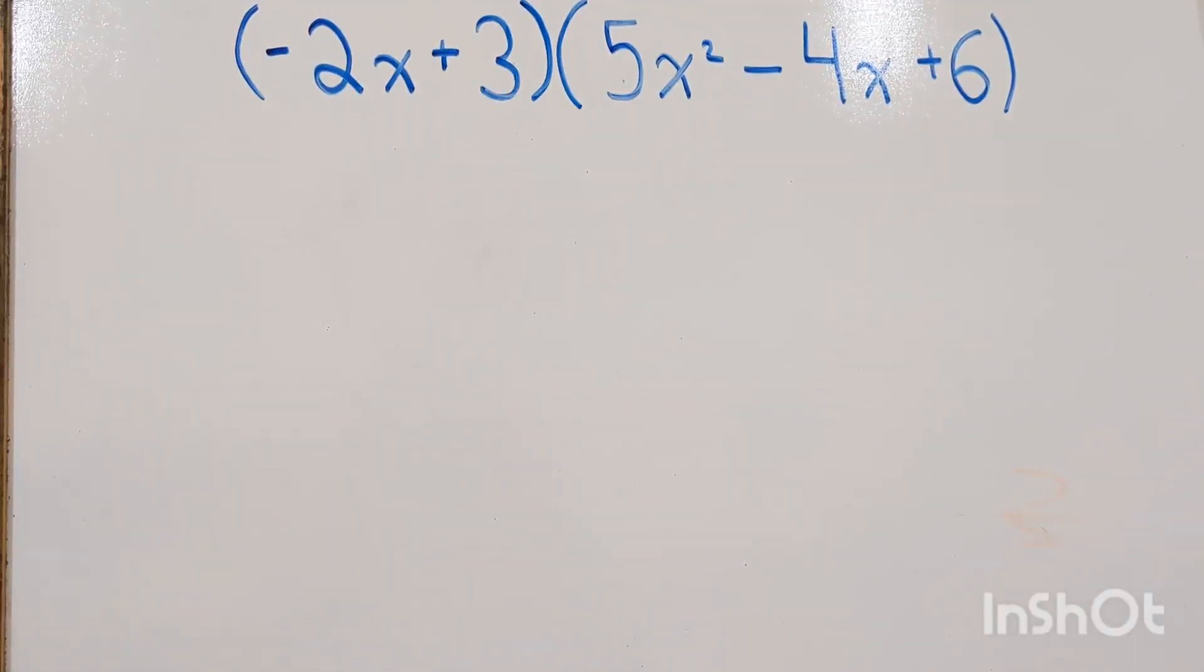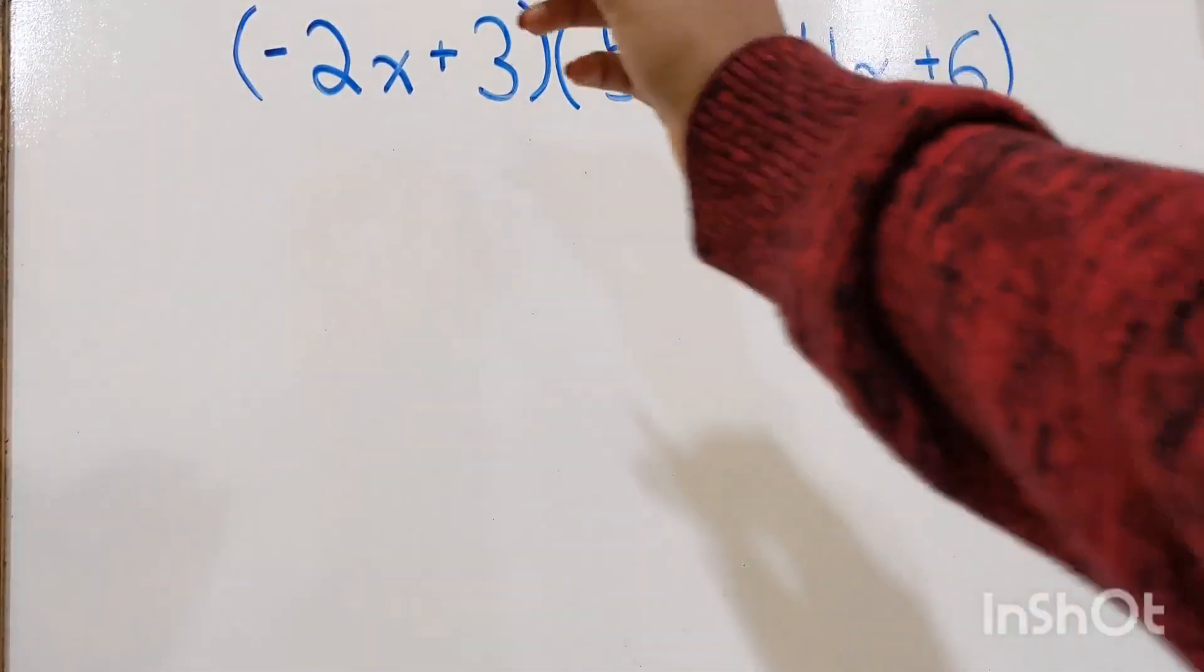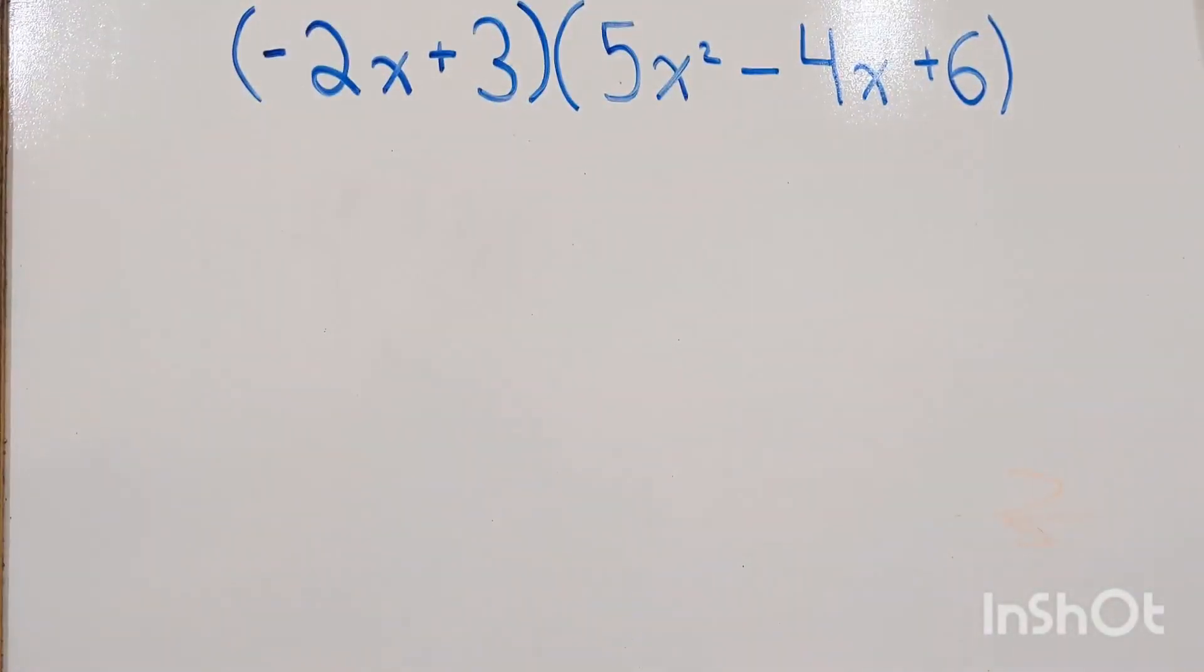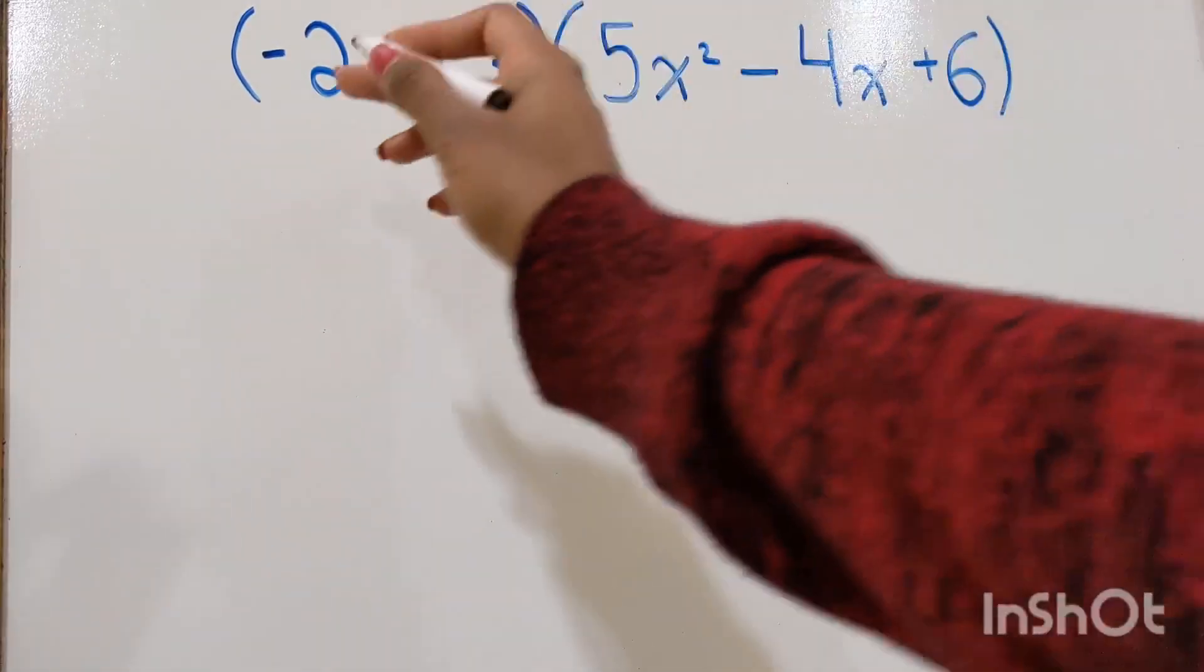So how you use the box method is, you write the terms of one of the polynomials on the top and the terms of the other polynomial on the side. And then, that will make it easier for you to multiply them. So I'm going to write this one on the top and this one on the side.